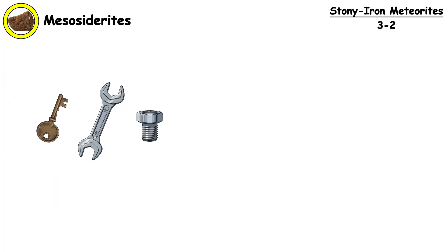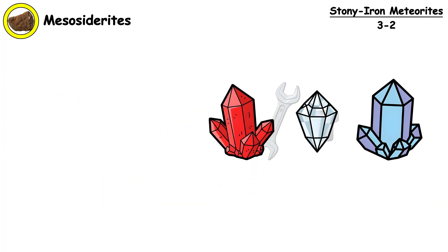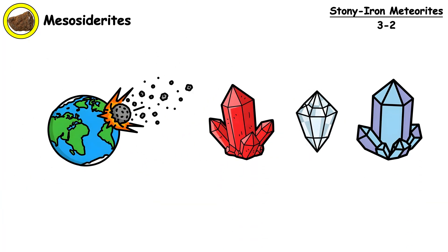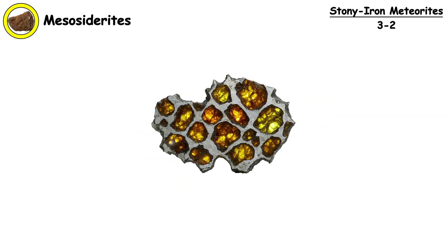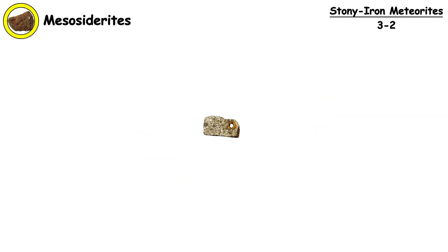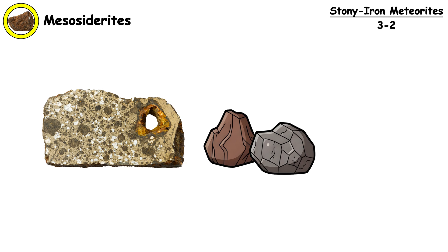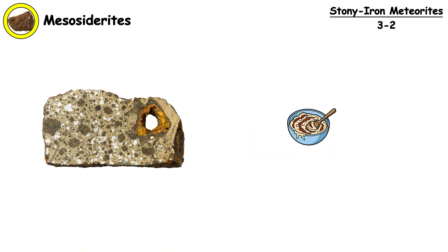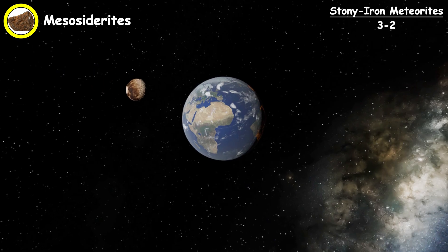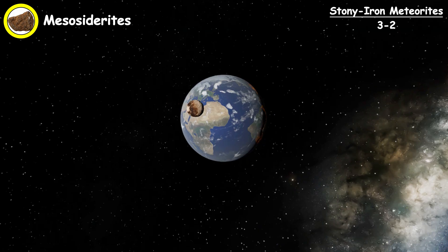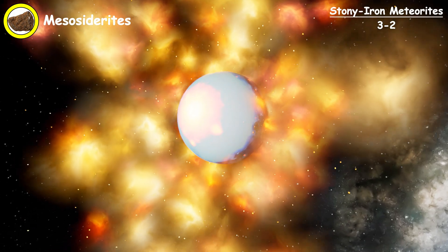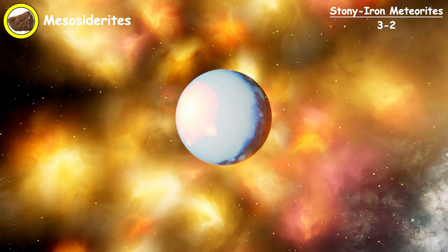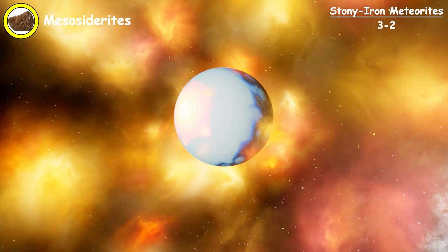Mesosiderites. They are mixtures of metal and silicate formed during violent asteroid collisions. Unlike pallasite's elegant crystalline metal structure, they show jumbled fragments of rock and metal mixed together like a badly stirred cake batter. The collision had to be violent enough to mix these materials, but not so energetic that everything vaporized.